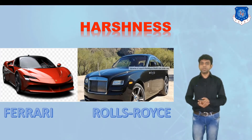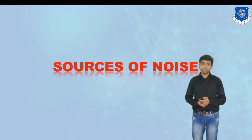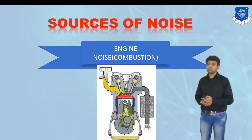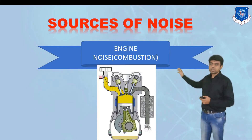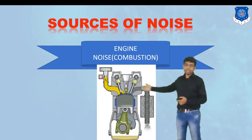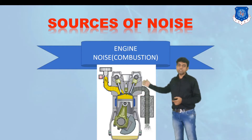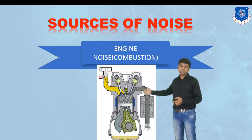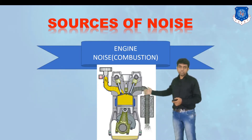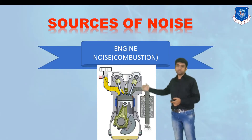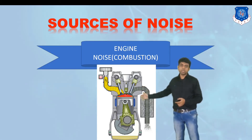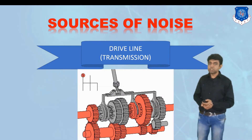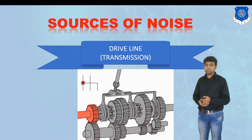Now let us understand the different sources of noise from an automobile. The major source is engine noise or combustion noise. At the engine compartment, there is transmission of fuel energy into the generation of indicated power. At that instance, a lot of heat is generated due to the combustion effect. Apart from that, there is friction force applicable at the surfaces of the piston and the cylinder, which accounts for a huge amount of engine noise.